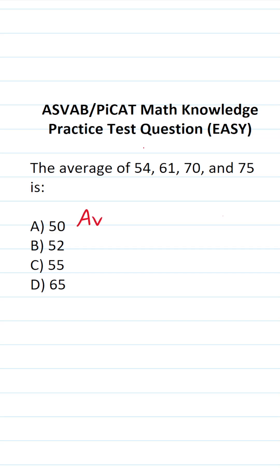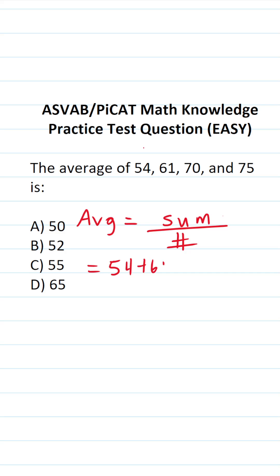In order to calculate an average, you're going to find the sum of all the numbers that you're given, and then you're going to divide that by how many numbers you added up. So let's go ahead and do that. Let's find the sum of 54, 61, 70, and 75.